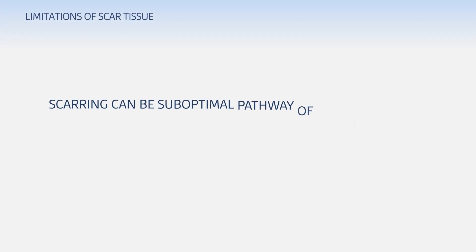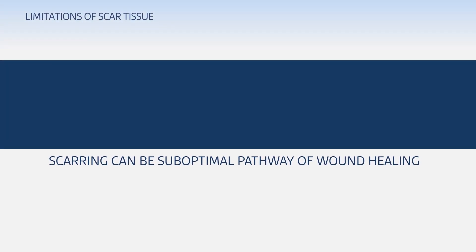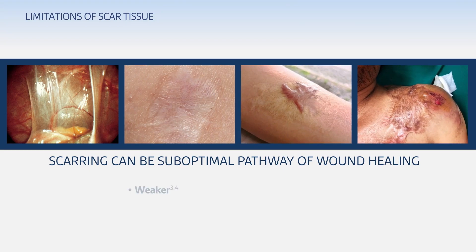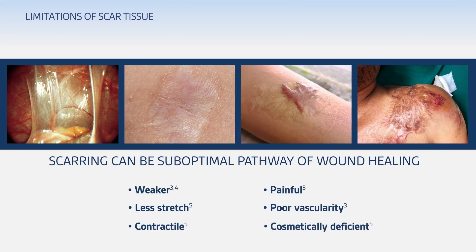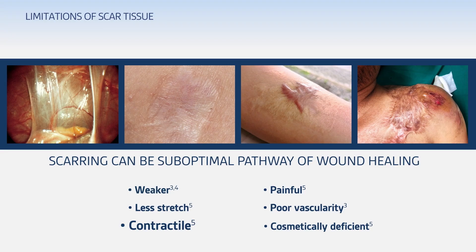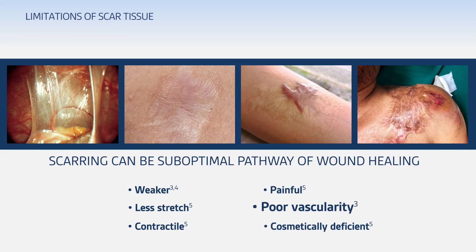And here's the problem. Scarring can be a suboptimal pathway of wound healing for several reasons. While you may be inclined to think it is stronger than native tissue, the fact is the functional, biomechanical, and physiological properties of scar tissue actually make it weaker than native tissue. Scar tissue does not stretch as easily as native tissue, and contraction can also limit its mobility. In postoperative wound healing, this can potentially lead to significant pain for the patient. Vascularization is poorer in scar tissue, and scarring can also cause contour deformities and cosmetic changes, which in some cases may lead to psychosocial issues that affect the quality of life.